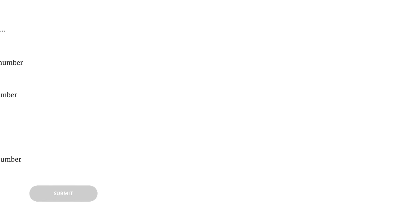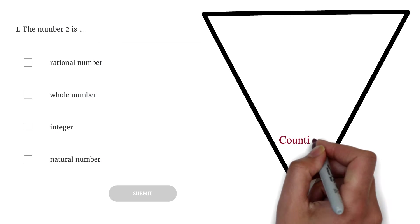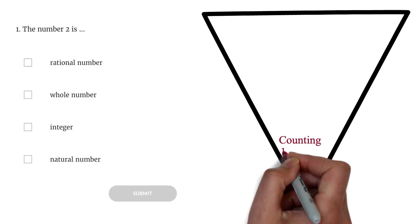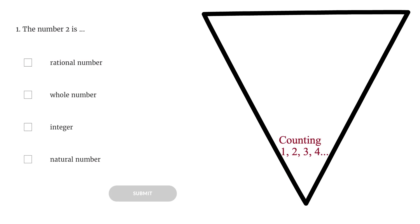We are starting with the introduction to numbers. Question 1: The number 2 is... Here, we are supposed to select all that applies. To get this right, we need to know the kind of numbers. Counting or natural numbers are the numbers we count. So we have 1, 2, 3, 4, and so on.